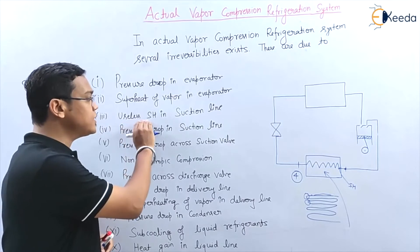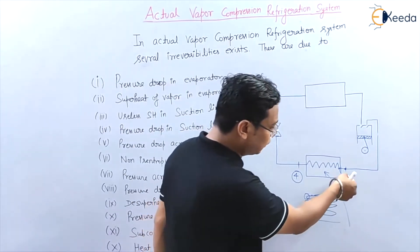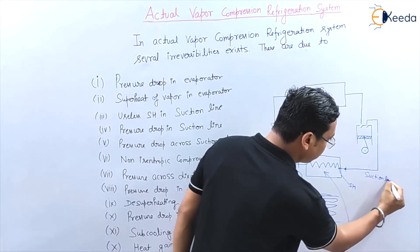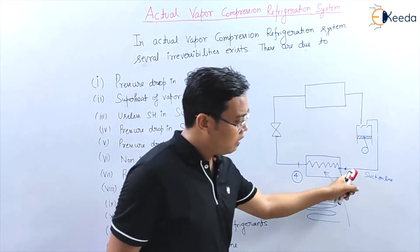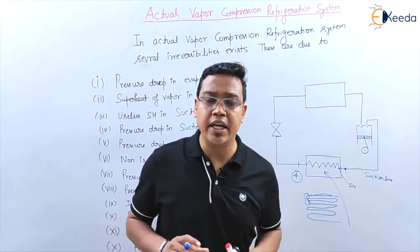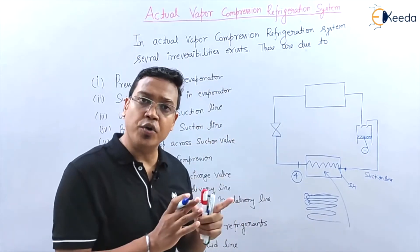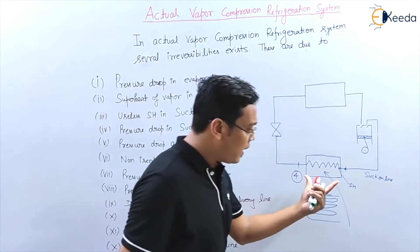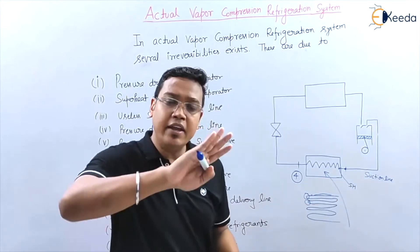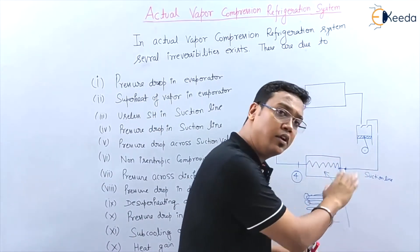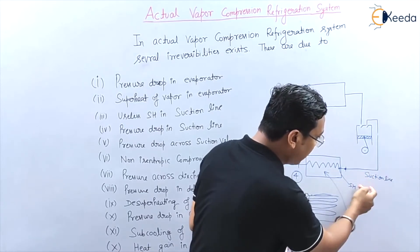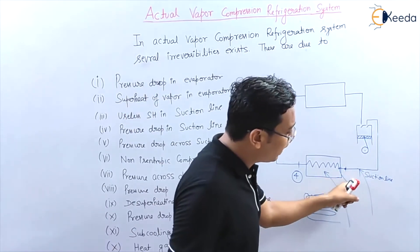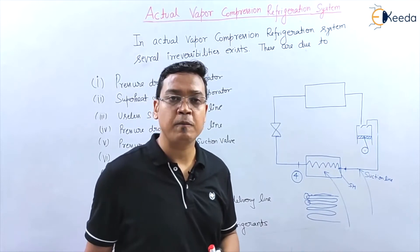The third point is useless superheating in the suction line. The suction line — as seen in window AC or split AC — is located inside the room. Because this suction line is inside the room, it also absorbs heat from the room, causing extra superheating of the refrigerant in the suction line.